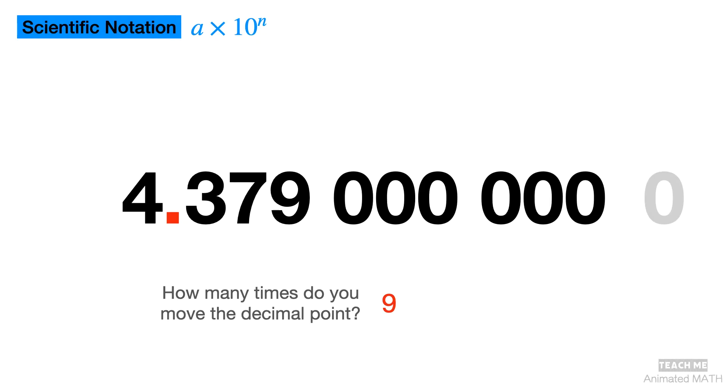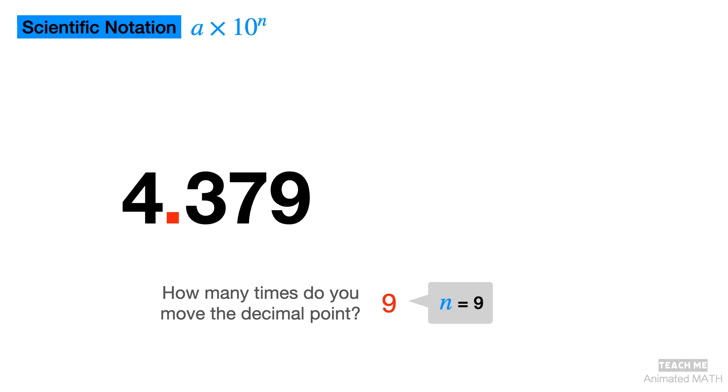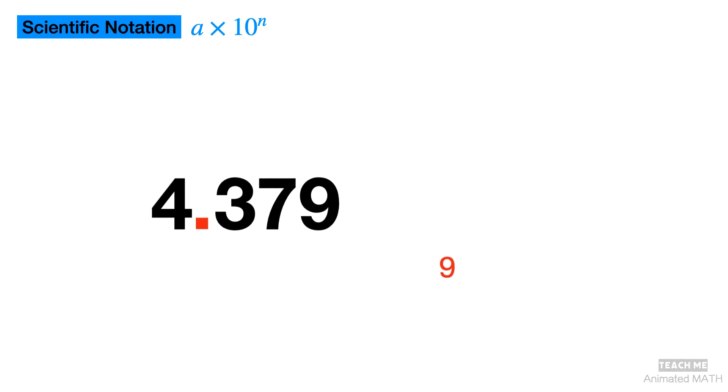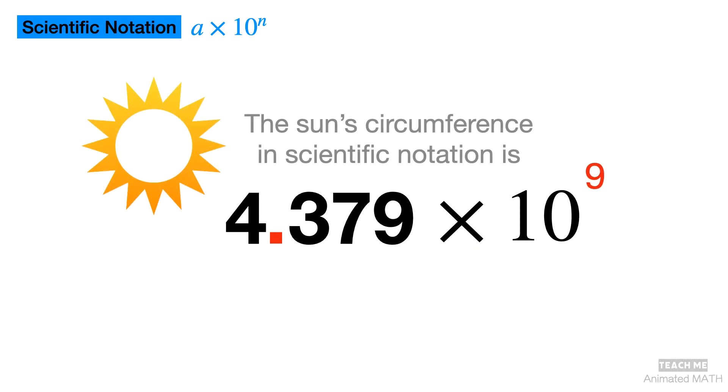This means the value of n is 9 and the value of a is 4.379. The scientific notation for the circumference of the Sun is 4.379 times 10 to the 9th power.